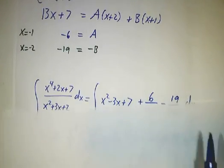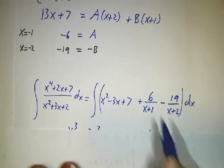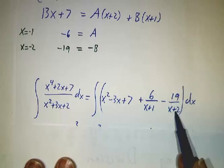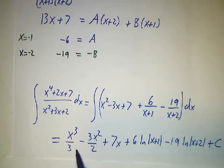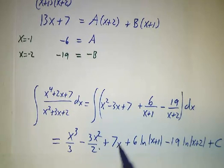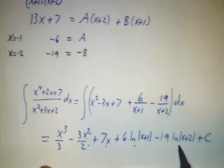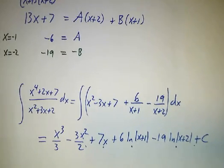The whole expression is the integral of this bit. The integral of x squared is x cubed over 3. The integral of 3x is 3x squared over 2. The integral of 7 is 7x. Plus 6 natural log of x plus 1, minus 19 log of x plus 2, plus an arbitrary constant. And we are done.